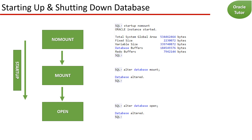You can use the Startup command in SQL*Plus to start the database instance. The Startup command has a number of options that allow you to specify which stage of the startup process you want to perform. The NOMOUNT option starts the database instance. When you start the database instance, the Oracle software reads the initialization parameter file, starts background processes, and allocates memory to the SGA.